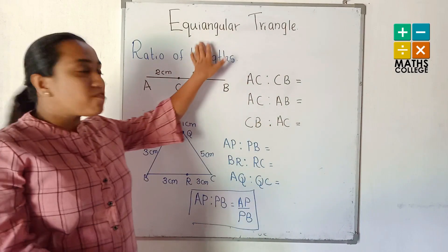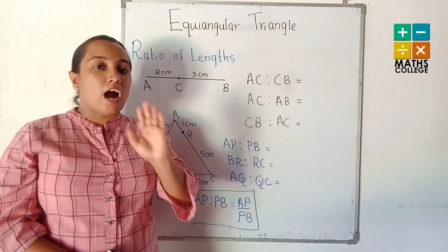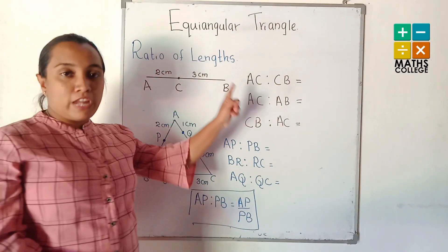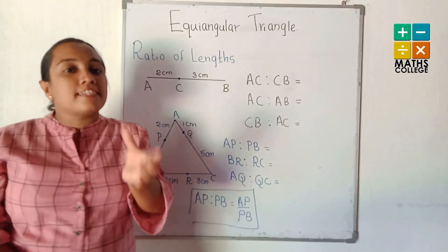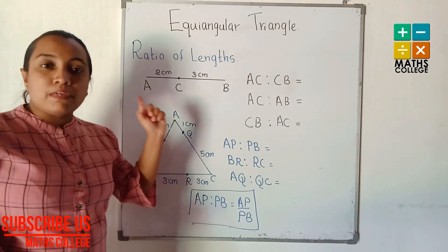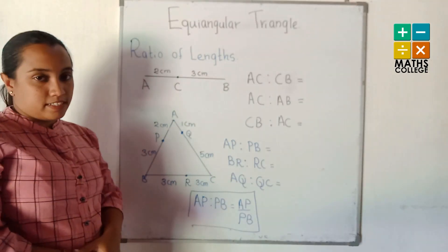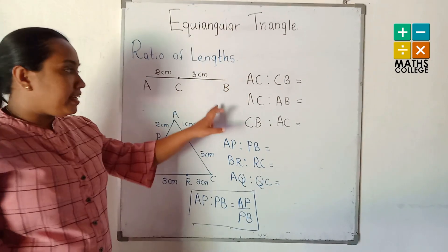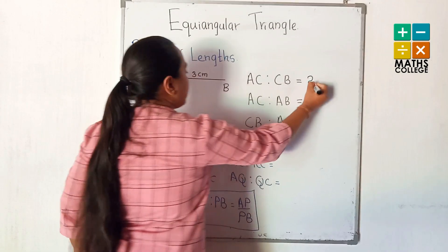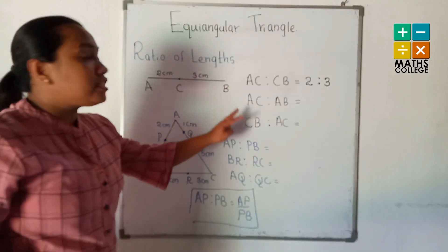The lesson is on the equiangular triangle. Before learning the theorem, first understand how to write the ratio of length. The lengths are given — how to write them as a ratio. It's the AB straight line and C lies on the AB line. The length of AC is 2 cm and the length of CB is 3 cm. The ratio of AC to CB is 2 to 3.